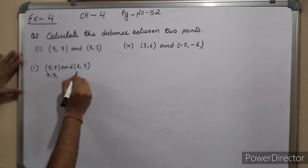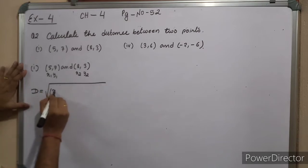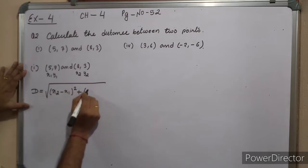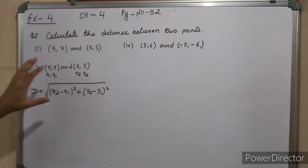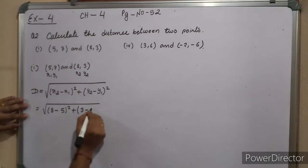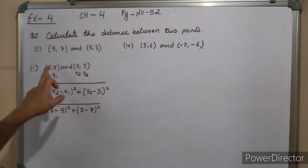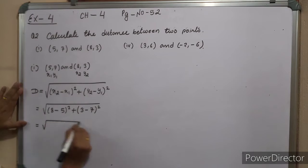The first point is x1, y1 and the second point is x2, y2. Now apply the distance formula: distance equals square root of (x2 minus x1) whole square plus (y2 minus y1) whole square. Substitute the values: x2 is 8, x1 is 5, y2 is 3, y1 is 7. So 8 minus 5 is 3, and 3 minus 7 is minus 4.